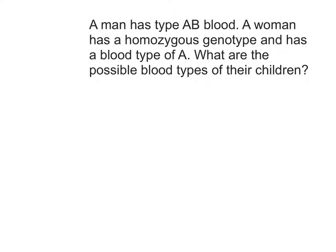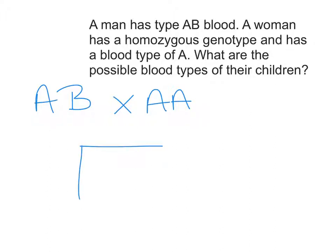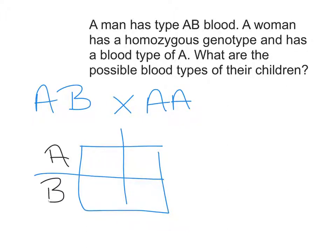In this problem, we have a man with blood type AB. AB is the genotype, and he marries a woman who is homozygous for type A blood. Remember, homozygous means two of the same allele, and if she is type A, that means she has to have two A alleles. So once we have our cross, we can put this into a Punnett square. AB for the man, AA for the woman, and we fill in the Punnett square.